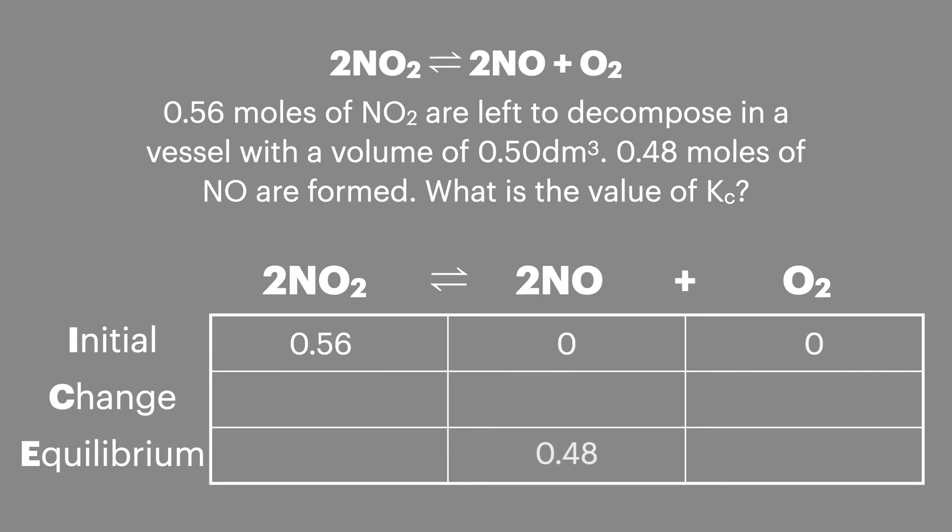At equilibrium 0.48 moles of NO have been formed and we can clearly see that the change for NO is plus 0.48. And because NO and NO2 are on a one-to-one ratio, NO2 will have decreased by 0.48. For O2 the ratio to NO is 2 to 1 so we'll half the change. Once we have these changes it's quite simple to work out the number of moles present at equilibrium.